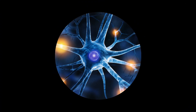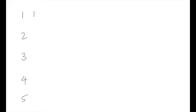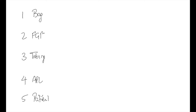This is how you draw the Mapleson circuits in under two minutes. First, have these five things listed: the bag, the fresh gas flow, the tubing, the APL valve, and then the patient. Next, create symbols for each one.